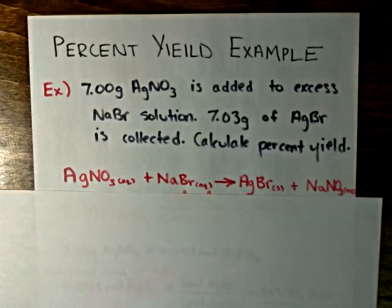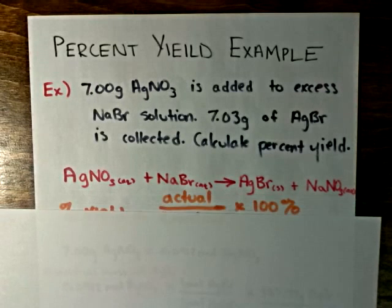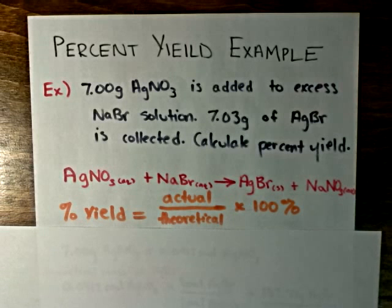And just to jog our memory, percent yield is equal to the actual mass divided by the theoretical mass times 100%.